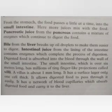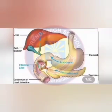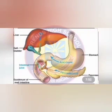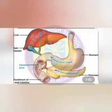Bile from the liver breaks up oil droplets to make them easier to digest. Intestinal juice from the lining of the intestine contains enzymes which complete the process of digestion. Digested food is then absorbed into the blood through the wall of the small intestine.